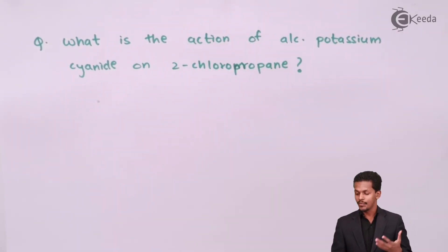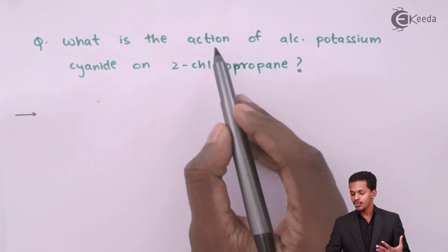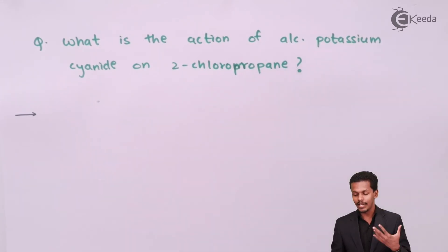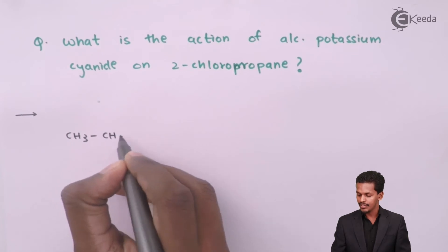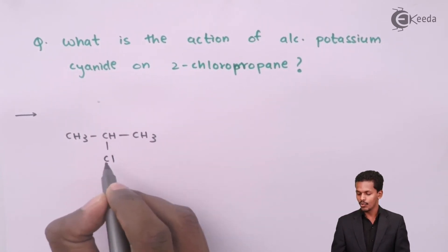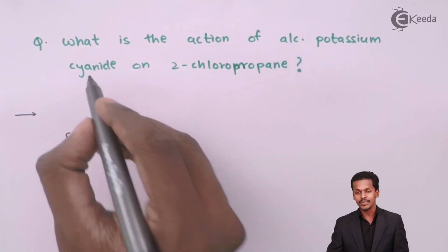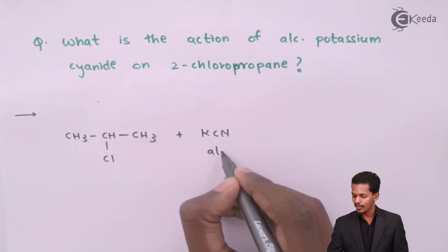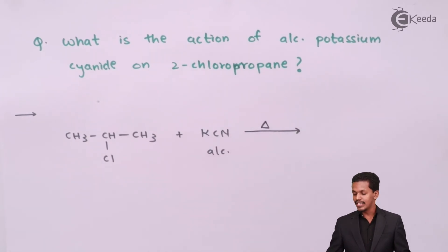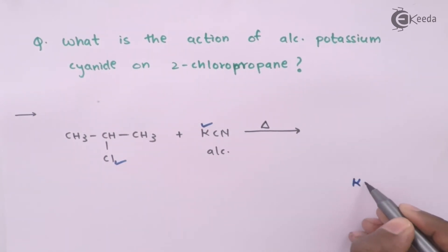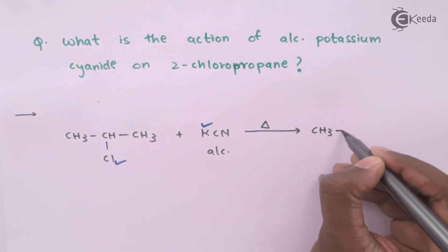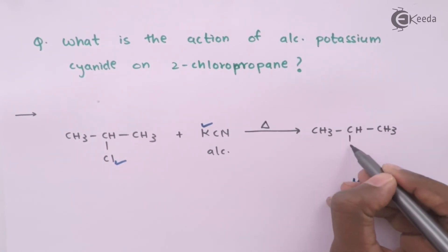Question 1: What is the action of alcoholic potassium cyanide on 2-chloropropane? The structure of 2-chloropropane is CH3-CHCl-CH3. We react it with alcoholic KCN solution. This is a substitution reaction in which potassium along with the Cl atom is removed as KCl, and what remains is CH3-CH(CN)-CH3, containing a C≡N group.